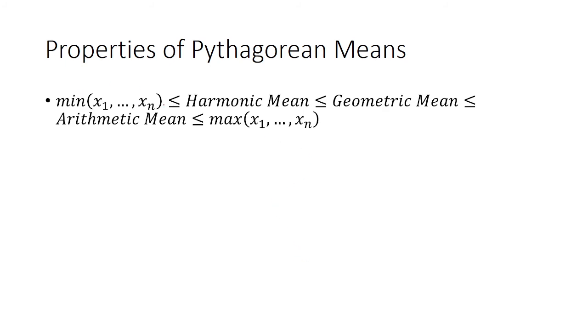From this, we know that the minimum and maximum are the bounds for the means. The harmonic mean is always going to be the smallest of the three means. The geometric mean is in the middle. And the arithmetic mean will always be greater than or equal to the other two means.